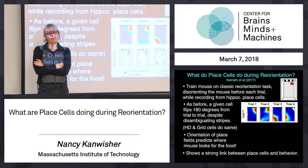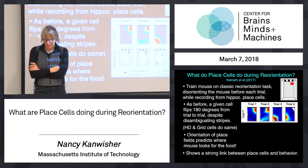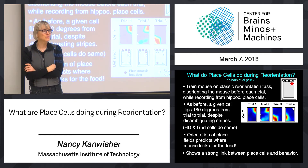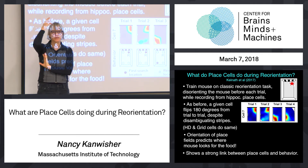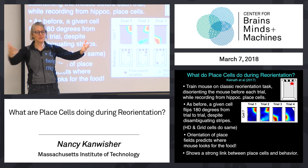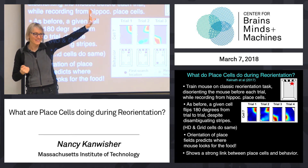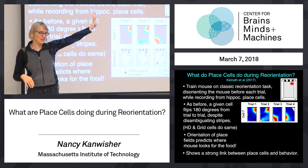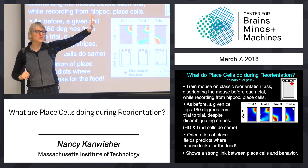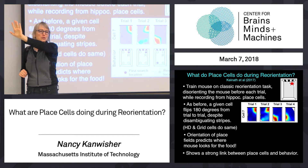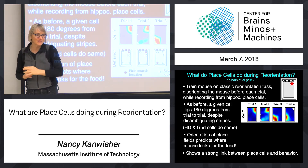Student question: If the mouse goes the wrong direction initially and then later finds the food, does the place field flip around? That's a good question — I'm not totally sure. There are experiments, not exactly like this, but in the more standard place field mapping setup where you have a rodent in an arena with cue cards on the distant wall that can serve as a beacon — like north or whatever. You can move those cue cards around and the place fields will track. How fast they move, I'm not totally sure, but pretty fast.